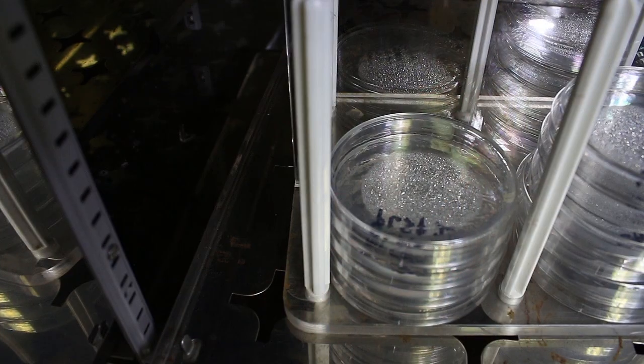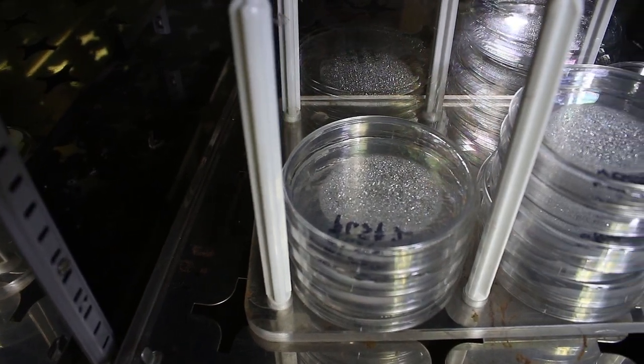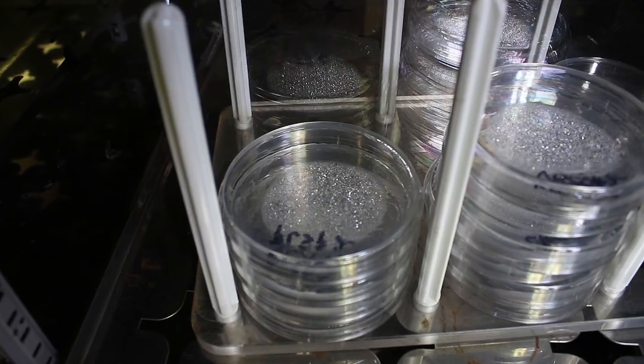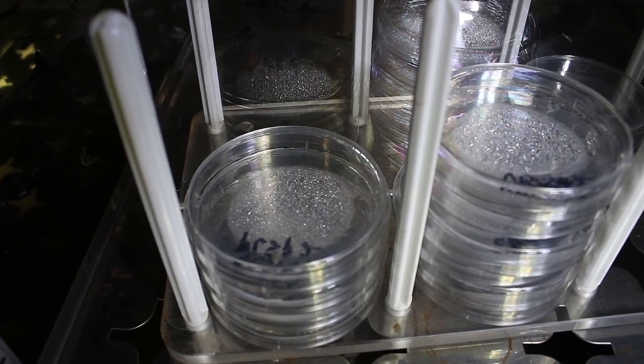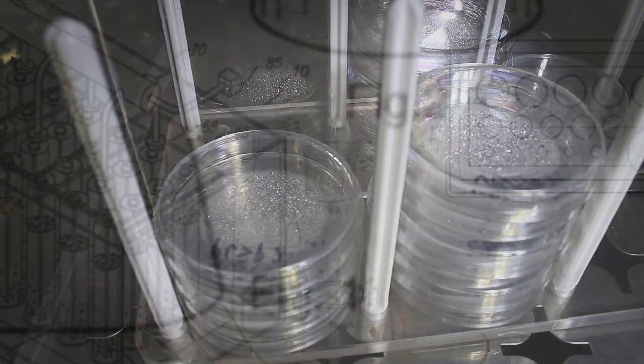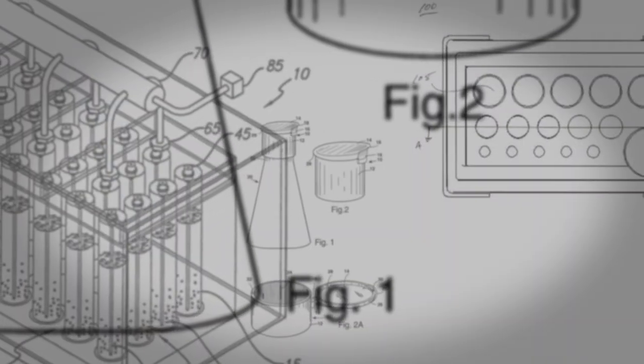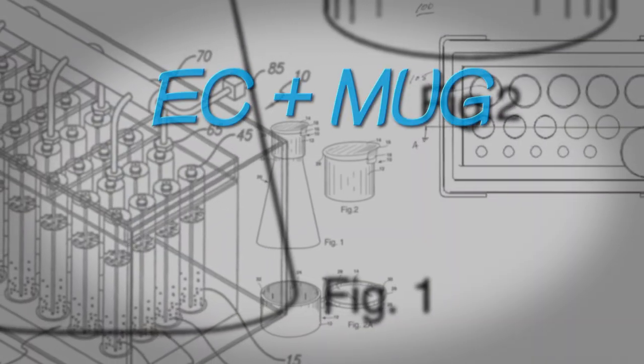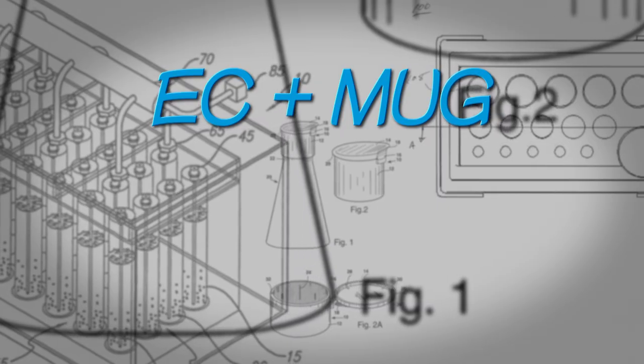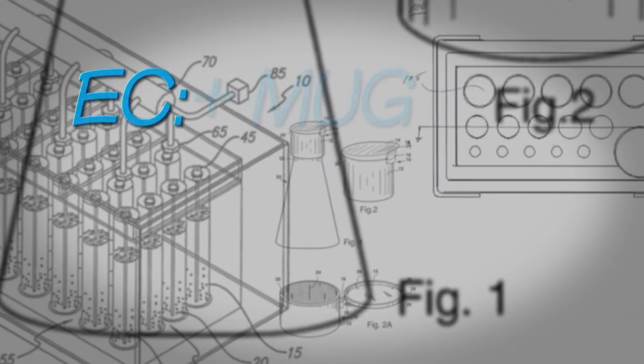This means that another test must be performed to determine if our total coliform positive sample also contains fecal coliforms. There are a number of different ways to make this determination, including the EC plus MUG technique.